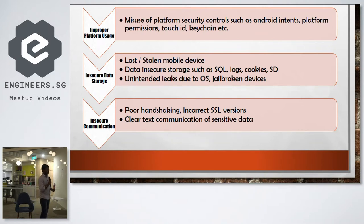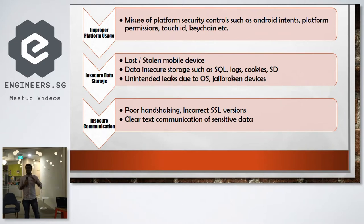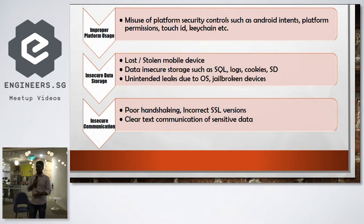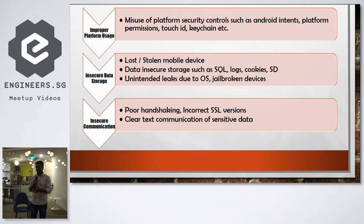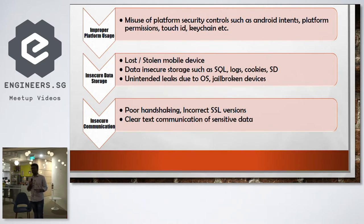Unintended leaks can also occur when using very old OS versions — for example, still using Android 4 or Android 2 when Android 8 is available. Android has stopped supporting those versions, so no security patches are released for them. Applications running on those OS versions are still vulnerable to data leakage. And jailbroken devices make all applications vulnerable — you should not use jailbroken devices in production.